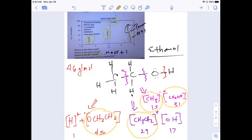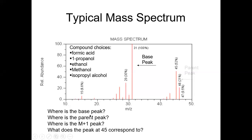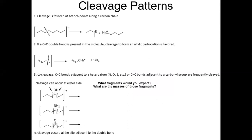Any questions about that? Is this fairly straightforward? All right. So we know where the parent peak is, the base peak, the M+1 peak, and the parent minus one at 45. On this slide there are some different fragmentation patterns. If you have a branched alkane like in number one, the branch points cleave off first - they cleave faster and you get these two fragments. If you cleave it here you would get these two fragments right here.